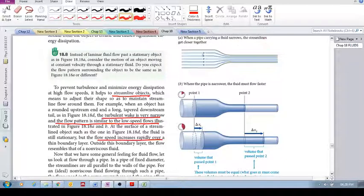The streamlines get closer together like this. Whenever we see the streamlines getting closer together, we will see that this means that the fluid must flow faster in this constricted region. So let's see why.